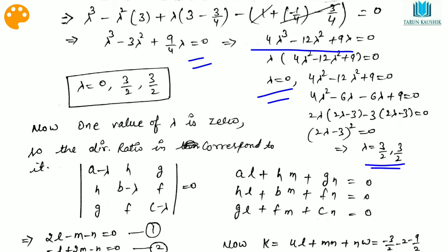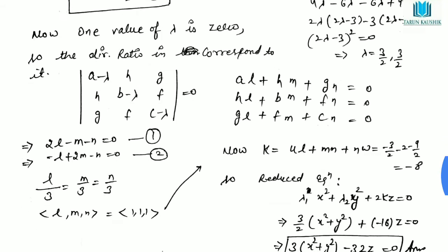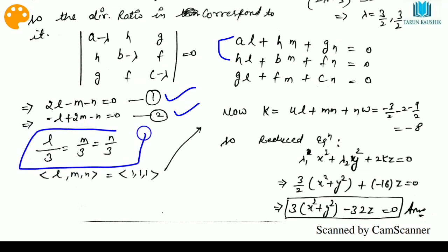Since one value of lambda is zero, we put lambda = 0 in the matrix equations and calculate the direction ratios l, m, n corresponding to lambda = 0. Using the first two equations with the values of a, h, g, and solving, the direction ratios l, m, n come out to be 1, 1, 1.